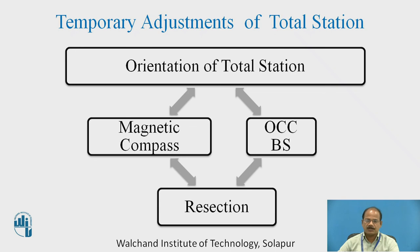The other possibility of orientation is with the occupied-station backsight method. In this case, we need another station whose coordinates are known, and from the occupied station we bisect it. However, there is one more method required when shifting the instrument to subsequent locations or extending the work from a new location — that is called resection.